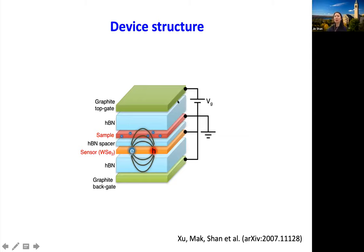If this 2D electron gas is in a metallic state, we expect higher screening — smaller binding energy for the exciton and lower oscillator strength. If it's insulating, we'll see larger binding energy and higher intensity. We have a moiré superlattice with two gates to control the doping density, and a very thin layer of hBN on the order of a nanometer to separate the sample from a single-layer TMD as our sensor. The spacer kills direct electronic coupling between the sensor and the sample.